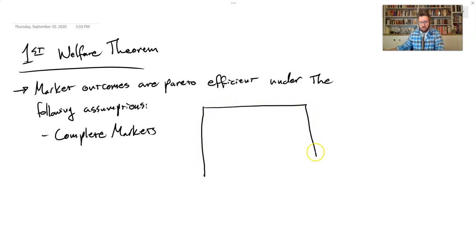Suppose we have an Edgeworth box. And we're sitting here. And this is the allocation we're at for Alice and Bob. Got Bob up here. These are their utility functions, their indifference curves. And this is, suppose this is food for Alice, food for Bob, and so on. And shelter for Alice and shelter for Bob.